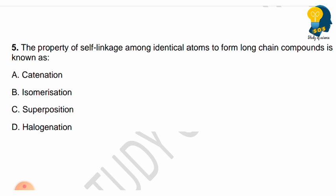Next question: The property of self-linkage among identical atoms to form long chain compounds is known as — options are catenation, isomerization, superposition, or halogenation. Carbon has a special self-linking property that forms long chains. What do we call that property? Choose carefully from catenation, isomerization, superposition, or halogenation.